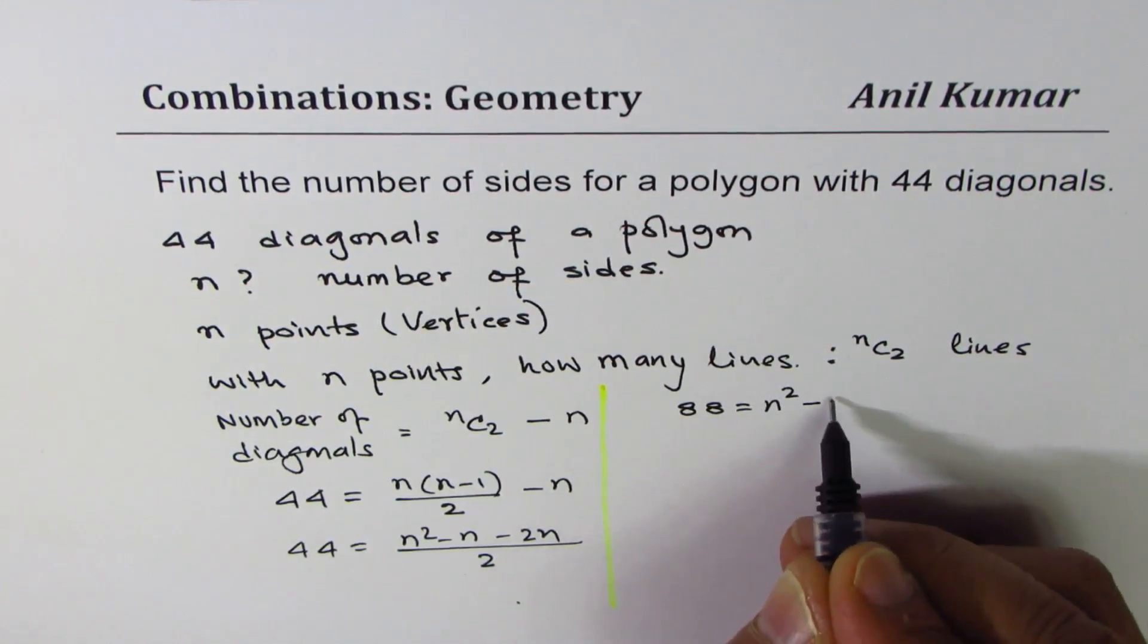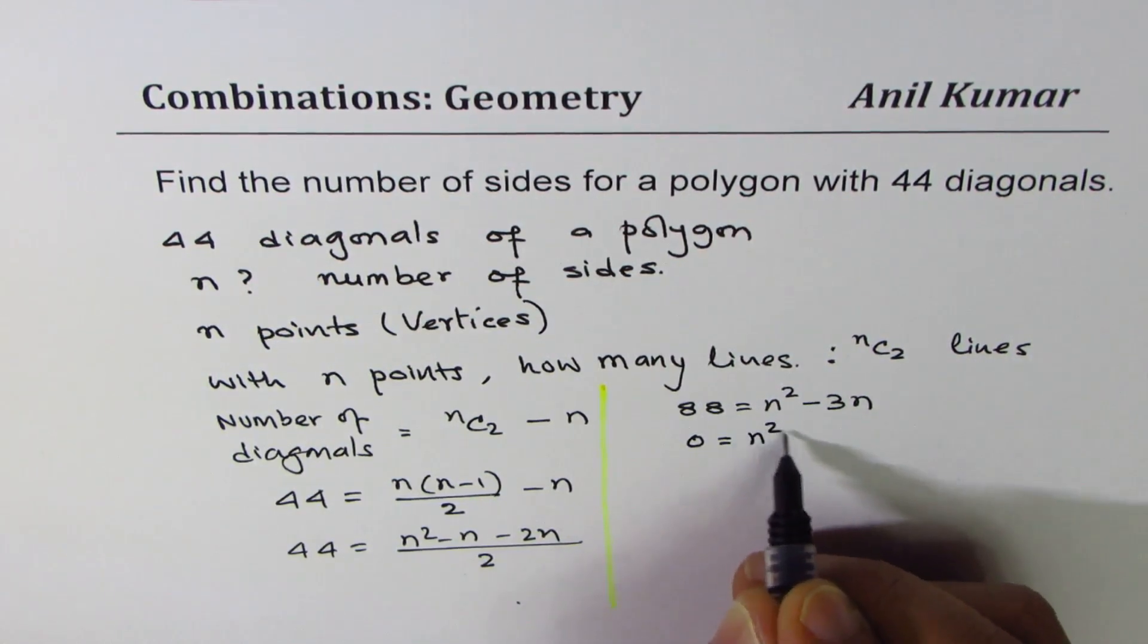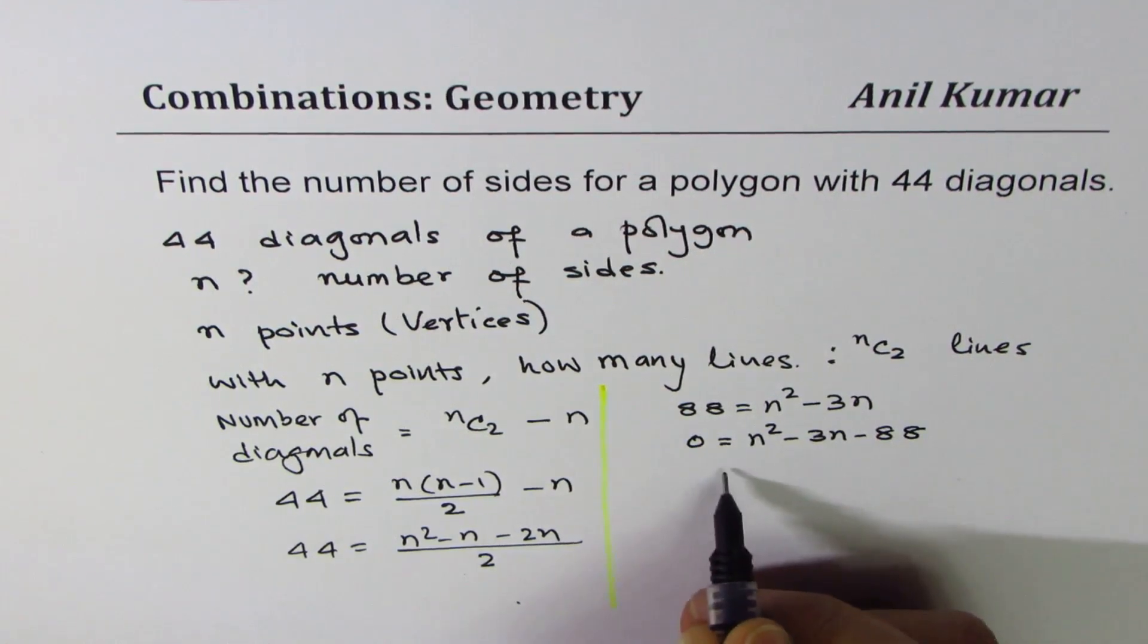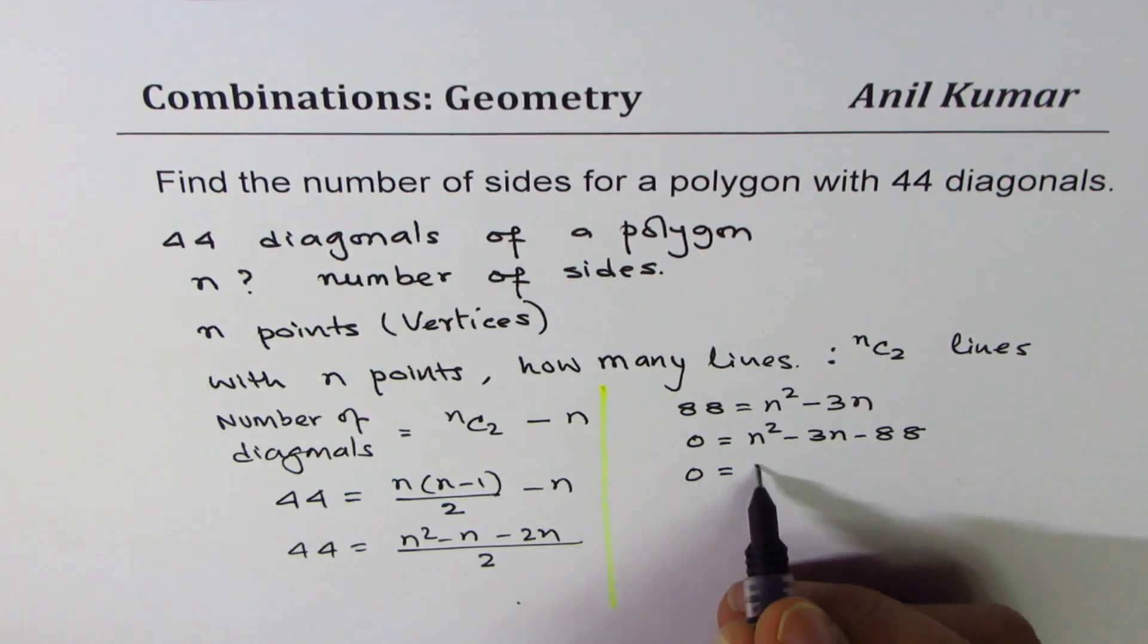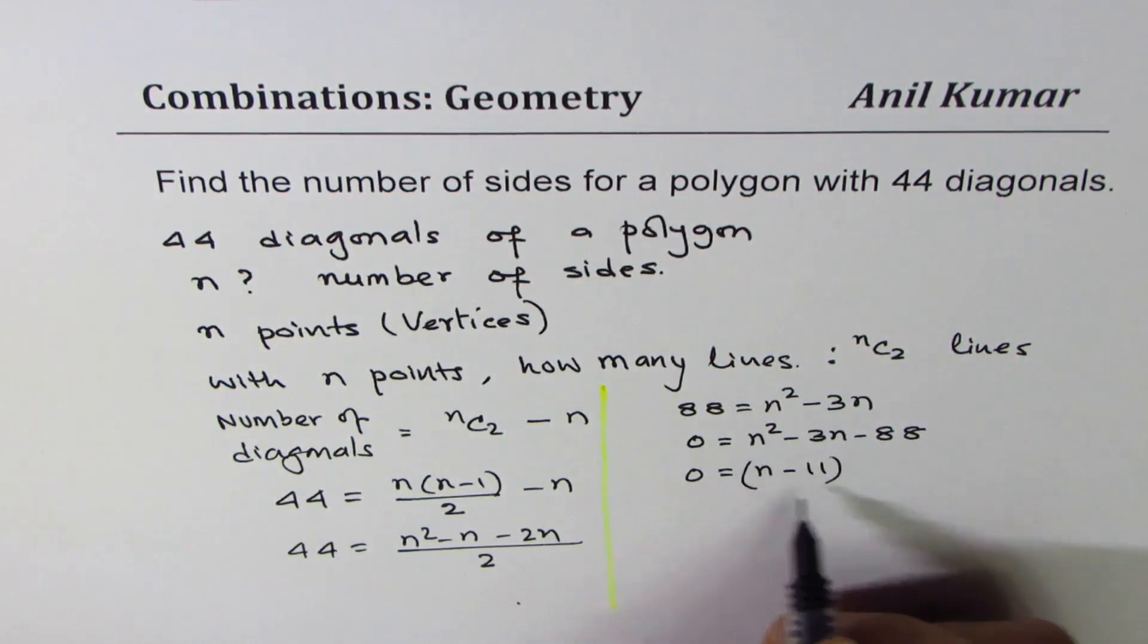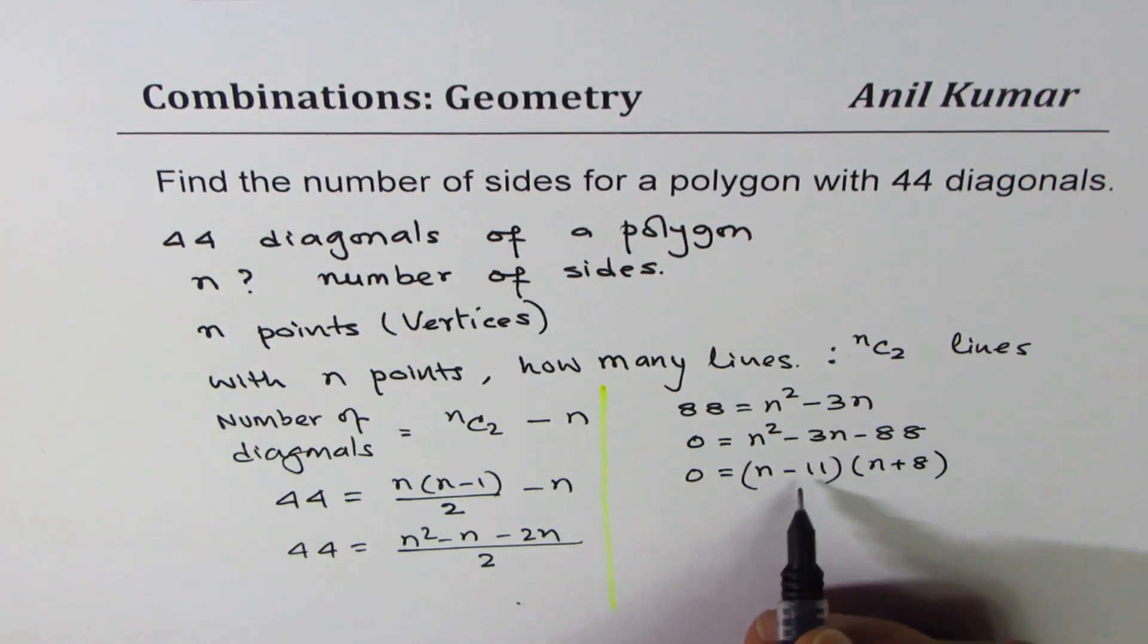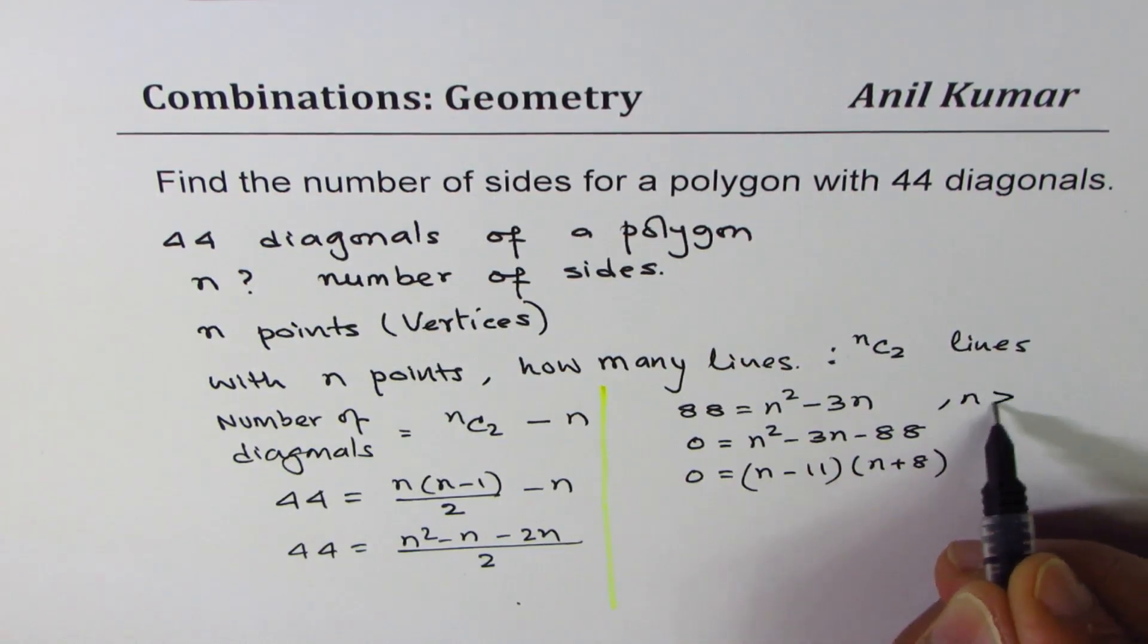Minus 3n minus 88. Now 88 is 11 times 8, so I could factor this as n minus, because this is the bigger number, 11 minus n plus 8, right? And from here we get two values of n, one is 11, one is minus 8.